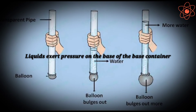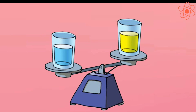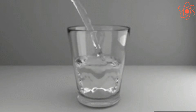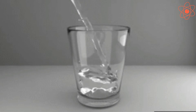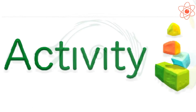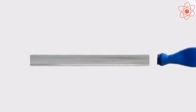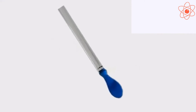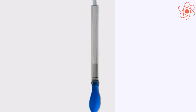First, liquids exert pressure on the base of the container. All the liquids have weight, so when we pour a liquid into a vessel, the weight of the liquid pushes down on the base of the vessel producing a pressure. Let us understand this with the help of an activity. Take a wide glass tube open at both ends. Tie a rubber balloon to one of its ends. Now hold the tube in a vertical position and pour some water into it. You will notice that the balloon bulges downwards.